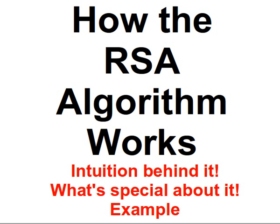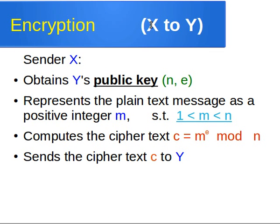In this video I'm going to give you a scenario where two parties want to exchange secret or encrypted information. Let's assume we have two ends, X and Y — two people, two computers, two machines — who want to exchange secret information. X is the sender and Y is the recipient. The idea behind RSA is that the recipient publishes its public key and keeps the private key to itself. So Y publishes its public key, which is the combination of N and E, and sender X obtains that public key.